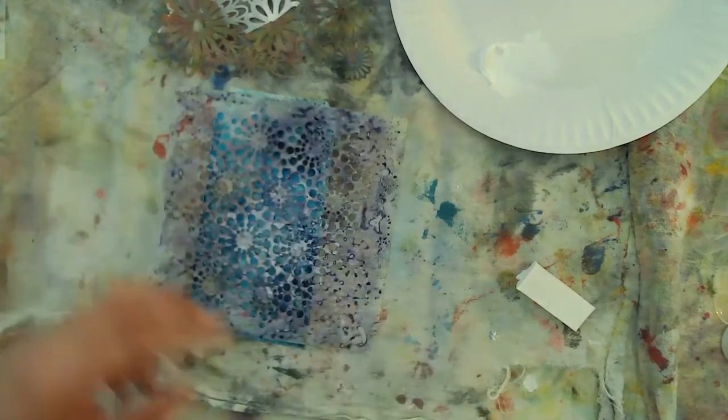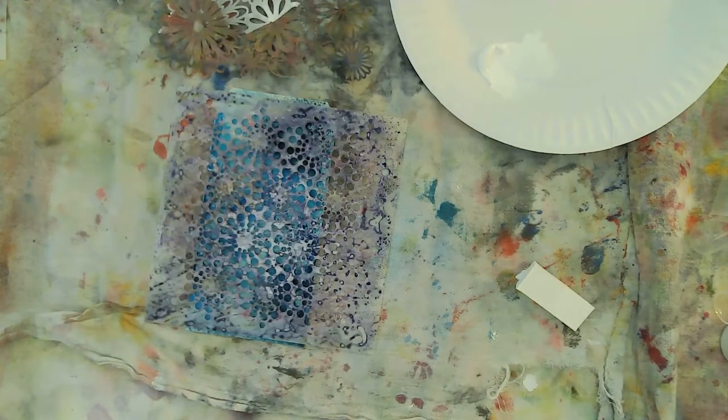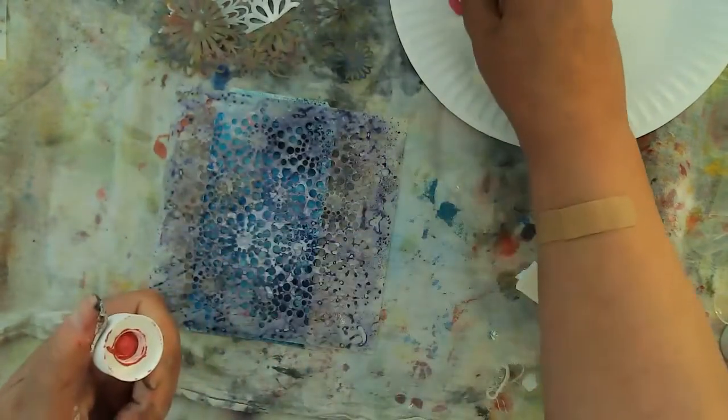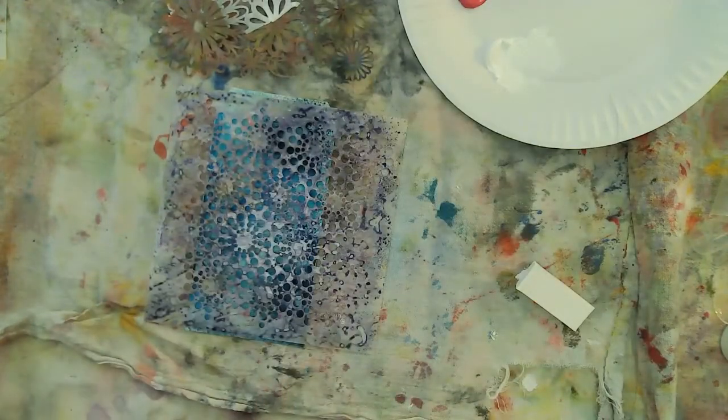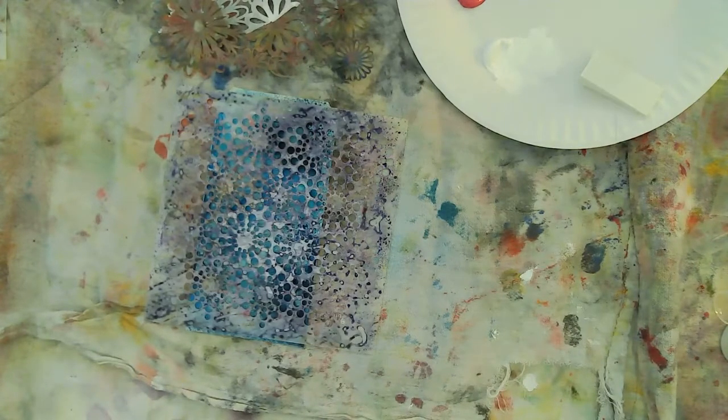I'm going to go ahead and use my circle stencil here. And I'm going to be using a medium magenta paint. This is Liquitex Heavy Body. I believe the white is also Liquitex Heavy Body, just as an FYI.